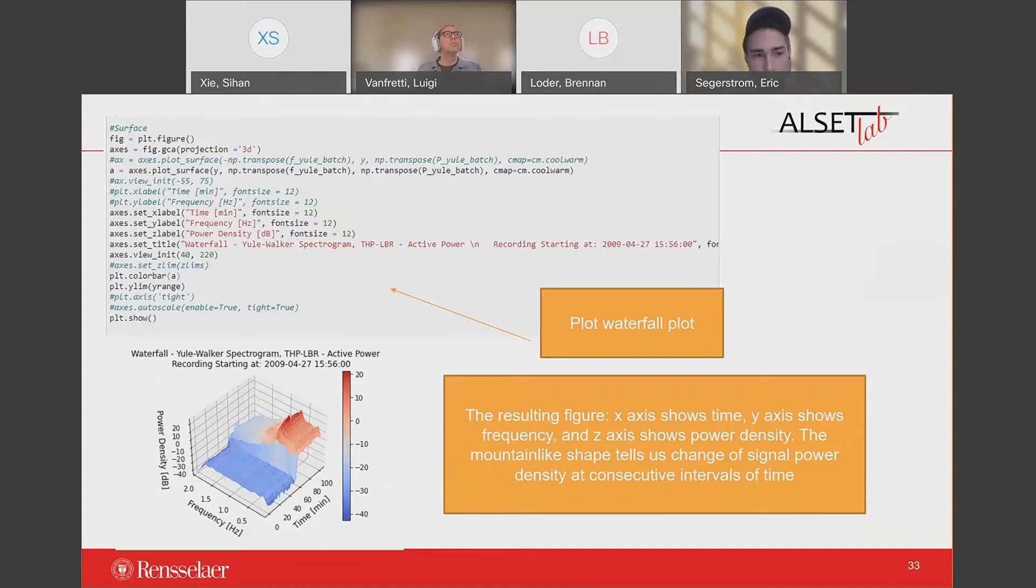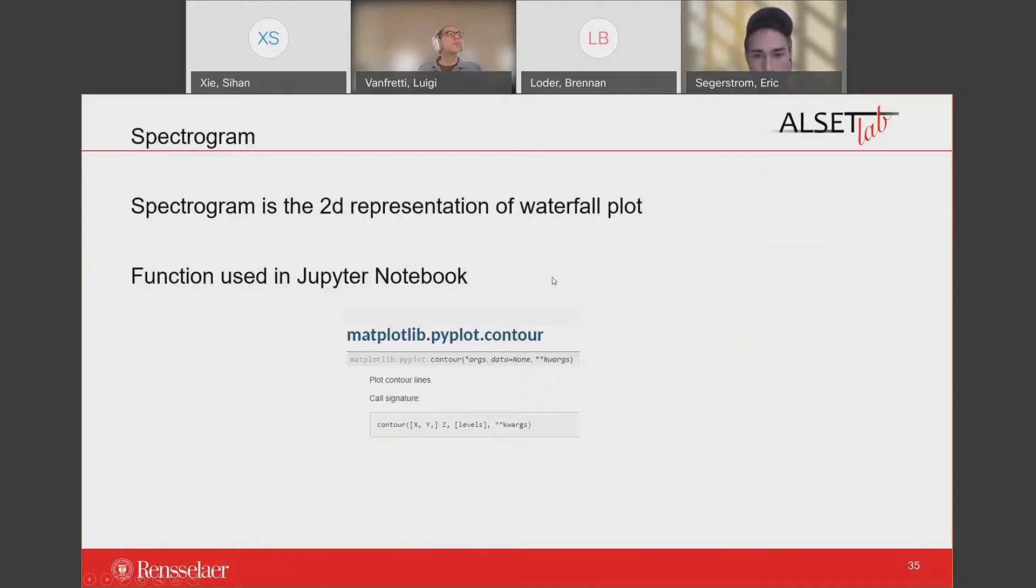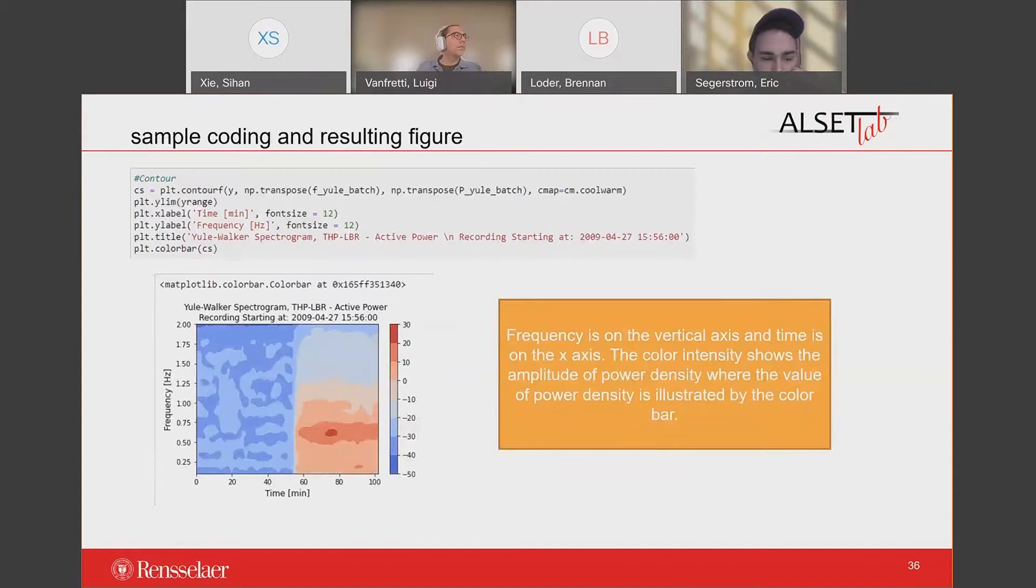We also need to plot the spectrogram, which is the 2D representation of waterfall plot. The function we use is also in matplotlib, which is called the contour. It takes the same input arguments as the plot surface with the frequency on the vertical axis and the time on the X axis. The color intensity of the spectrogram shows the amplitude of power density, and the color bar illustrates the numerical interval corresponding to various spectral density colors.